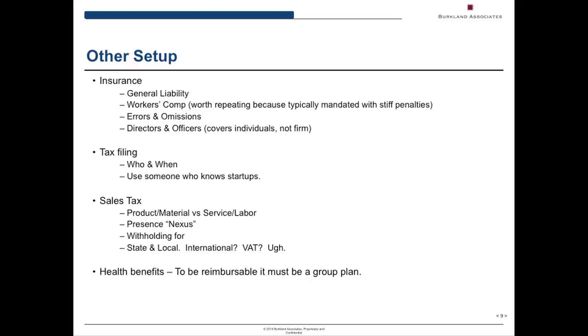Errors and omissions is sort of an umbrella insurance that you use so that if you make an honest mistake when you're completing something to an investor, you will have some insurance in case there's a shareholder lawsuit. That's kind of an honest mistakes kind of thing.